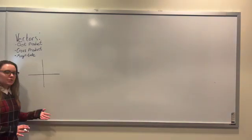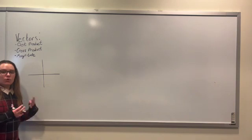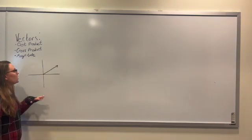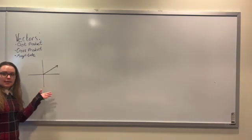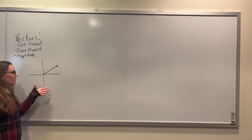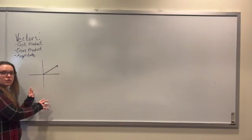So a vector is basically a line, but it has more qualities to it. A vector is basically a line segment between two points, but it has direction and magnitude.